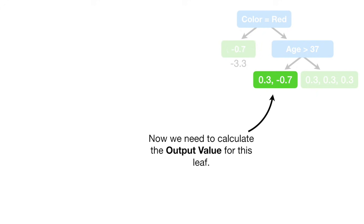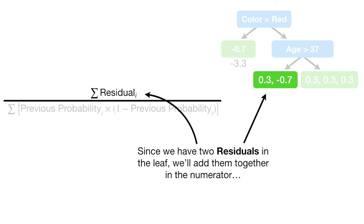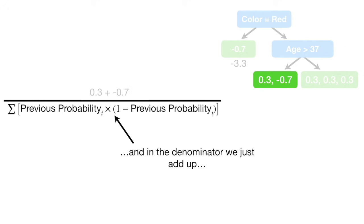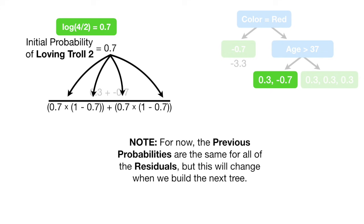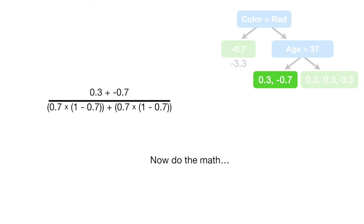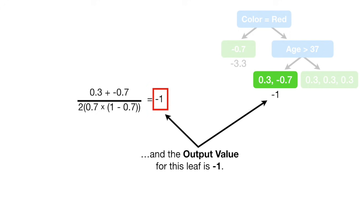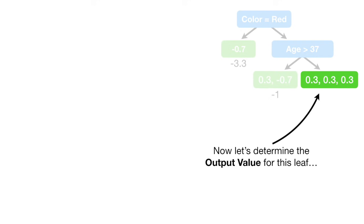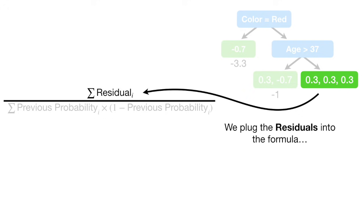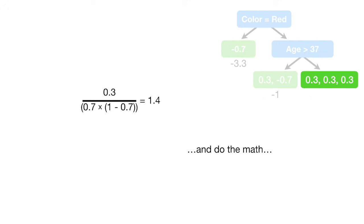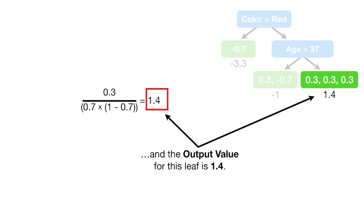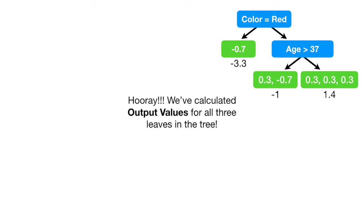Now we need to calculate the output value for the next leaf. Since we have two residuals in the leaf, we add them together in the numerator, and in the denominator we add up the previous probability times 1 minus the previous probability for each residual. Note: for now, the previous probabilities are the same for all residuals, but this will change when we build the next tree. The output value for this leaf is negative 1. Now let's determine the output value for the third leaf — we plug in the residuals and the previous probabilities, do the math, and the output value is 1.4. Hooray! We've calculated the output values for all three leaves.